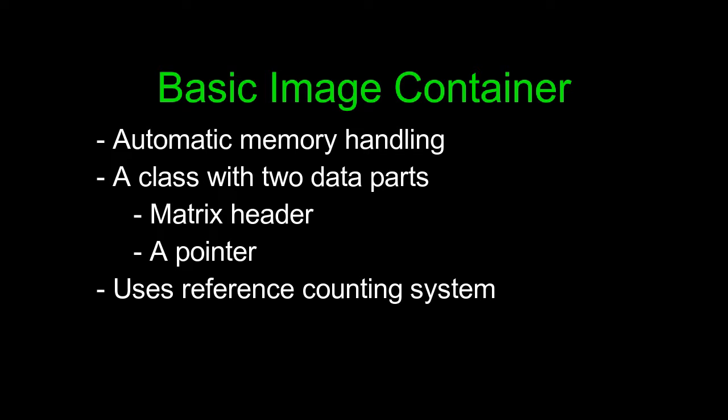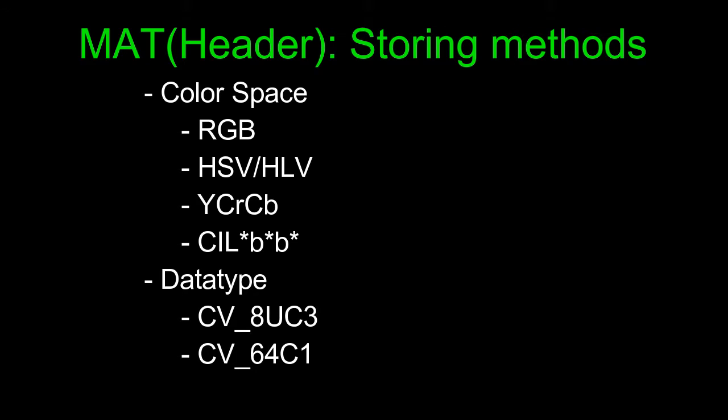OpenCV uses a reference counting system which ensures that a resource image is still in memory till it has any pointer pointing towards it—I mean, pointing towards its pixel matrix. You will get a more clear picture about reference counting system when we do some programming.